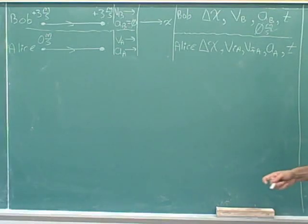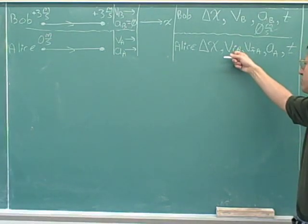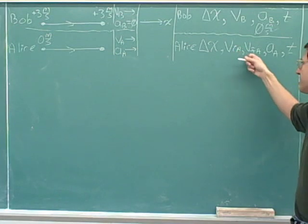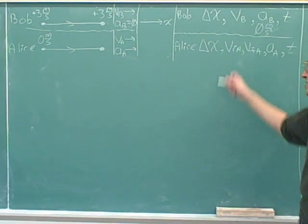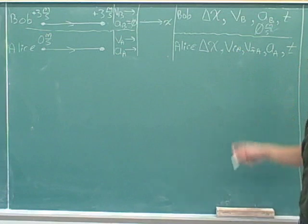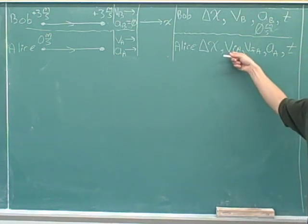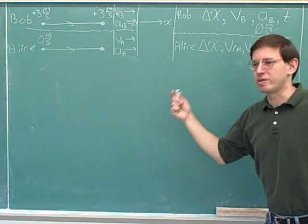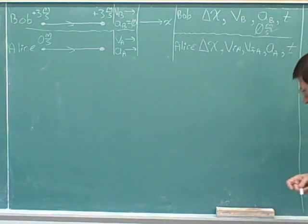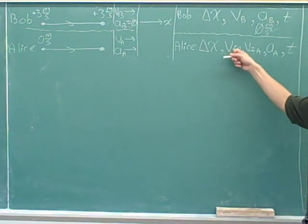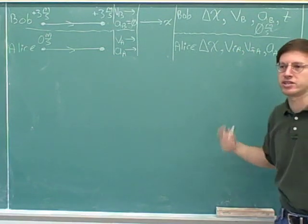Something else you might have noticed is I'm not putting down subscripts to show these are the x velocity or the x acceleration. Maybe you can see why I'm not saying these are the x velocities anymore, because if I did, I would have three subscripts. I like subscripts, but even I don't really like writing three subscripts. So we're not going to call this v-initial-Alice-x or v-final-Alice-x — that would just be too many subscripts.